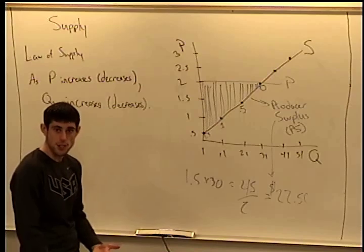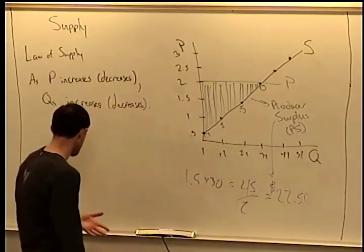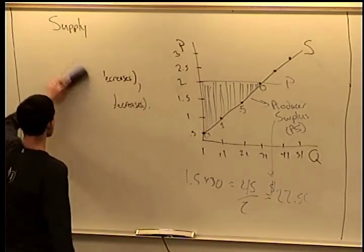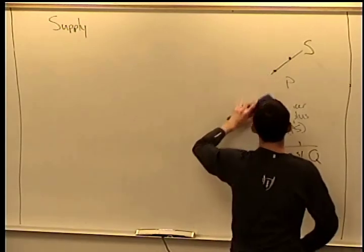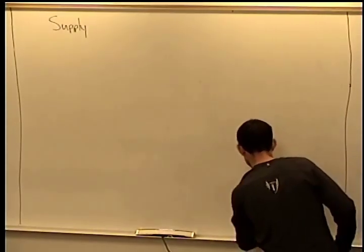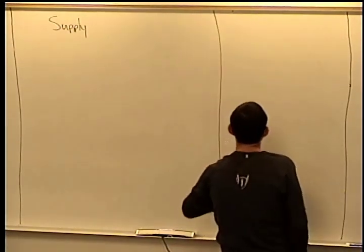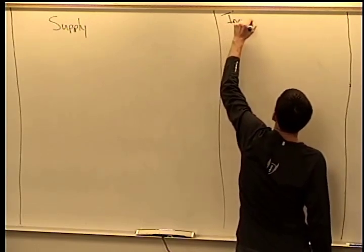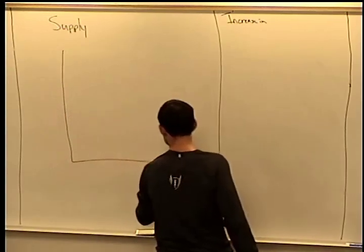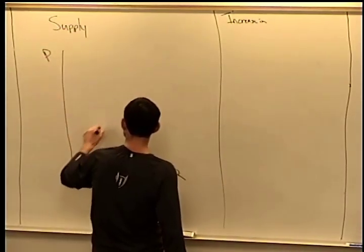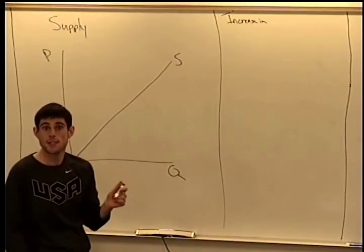The last thing is what happens if something other than price changes. There are additional factors that would change how much firms supply beyond price. Just like on the demand side we had shifts in demand — factors that change demand — we have factors that change supply. Here's the supply curve for pizza.